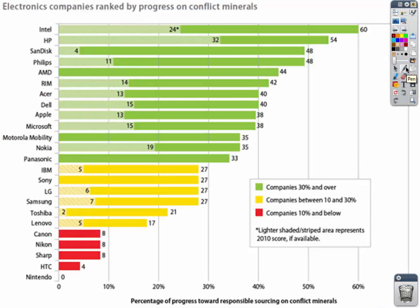Here are the electronics companies ranked by their progress on eliminating conflict minerals from their products. The green ones at the top are the companies we should feel good supporting — like HP, Intel, Apple, Microsoft, and Dell. More importantly, which companies should we let know through consumer choice that we wish they'd change their ways? Companies like Sony, LG, Samsung, and Toshiba, as well as some camera companies.